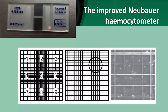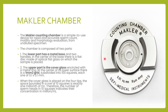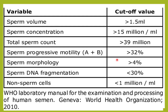This is an improved Neubauer hemocytometer, which is used to measure the sperm count. This is the Makler chamber — also a counting chamber used to rapidly and accurately measure sperm count, with a lower metal base and an upper cover glass. The total sperm concentration should be more than 15 million per ml and the total sperm count should be more than 39 million per ejaculate.